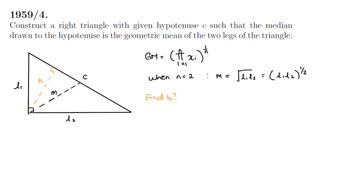If we can find h in terms of c then we'll know the perpendicular distance of the point to the given hypotenuse so we'll know where our third point is.